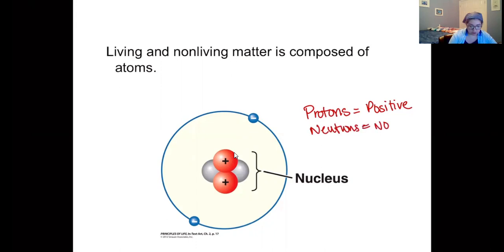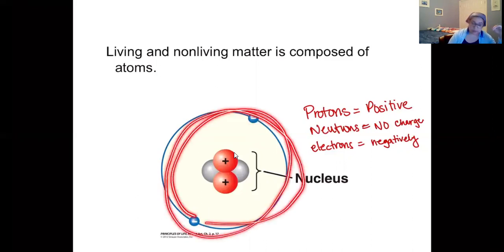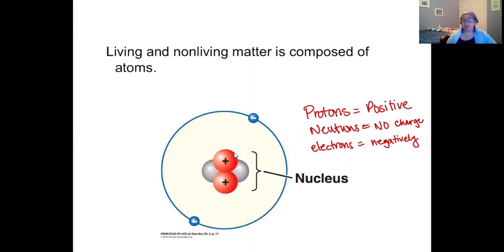The last particle that makes up matter are called electrons. Electrons are very, very small and they're negatively charged. You can see right here, there's one electron. Here's another. The electrons orbit around the nucleus. Most of what we focus on when we're talking about biology is these electrons and how those electrons behave.